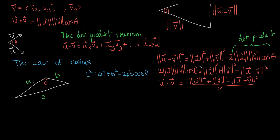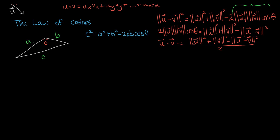Now this is where it gets interesting. Let's try to evaluate and simplify this expression to prove the connection between the dot product theorem and the definition of the dot product. The magnitude squared terms involve a square root, but since they're squared, we can simplify: |u|² becomes just ux² + uy² + … + un².